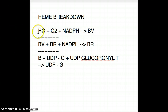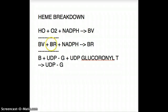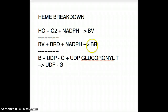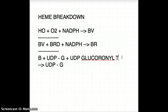Let's go over it one more time. Heme is acted on by heme oxygenase plus oxygen plus NADPH to give us biliverdin. Biliverdin combines with biliverdin reductase plus NADPH to give us bilirubin. Then bilirubin plus UDP-glucuronosyltransferase gives us UDP-glucuronate.